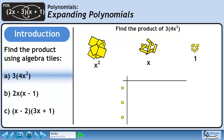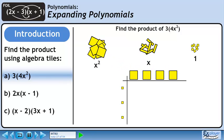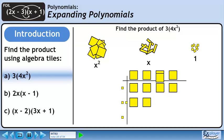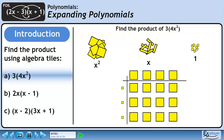We represent 3 by putting 3 small yellow squares in the left column. We represent 4x squared by putting 4 large yellow squares in the top row. Complete the grid by multiplying all of the pieces together as shown in the animation. The inner grid contains 12 large yellow squares, and since each yellow square represents x squared, the answer for our product is 12x squared.